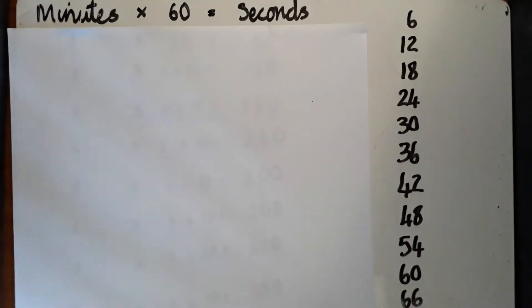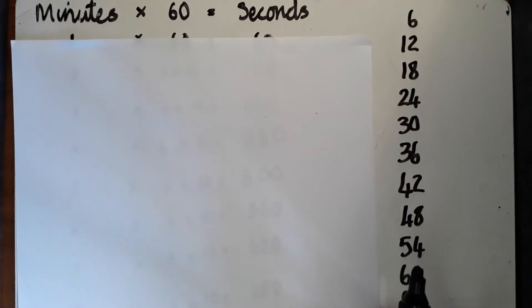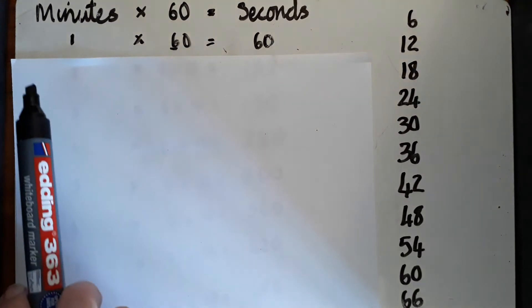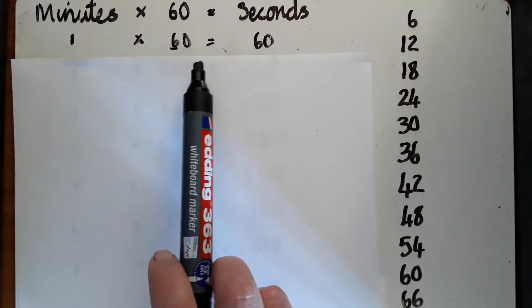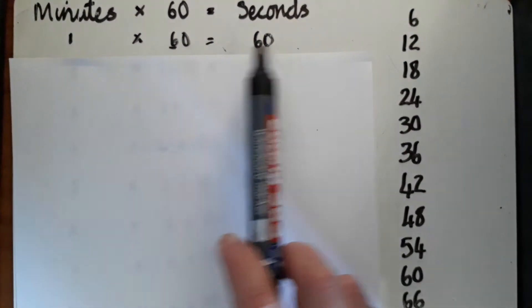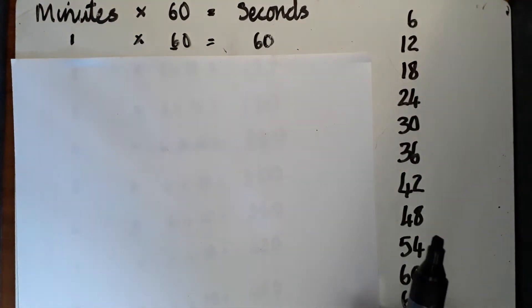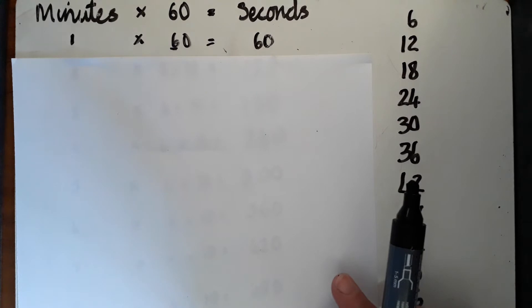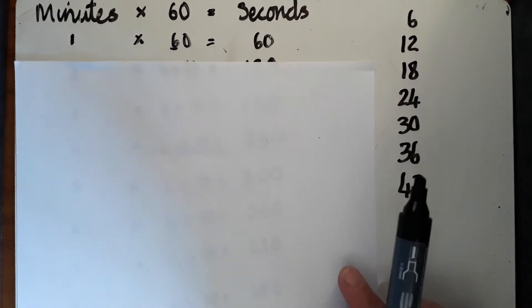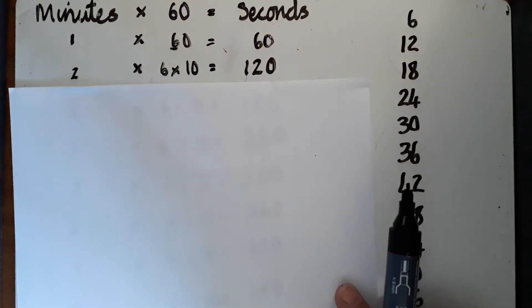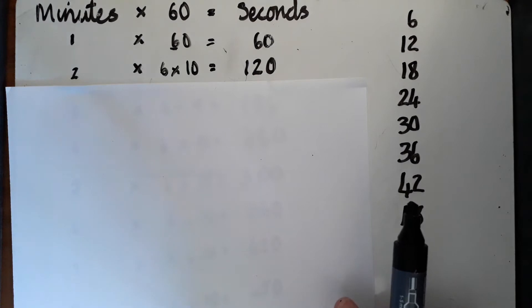Here we can see already that if we have one minute and we multiply it by 60, that is 60 seconds. So now is where I'm going to start to think maybe about my times, my six times table.